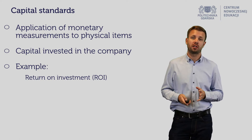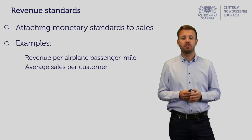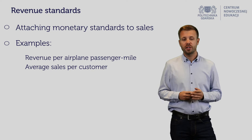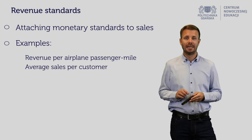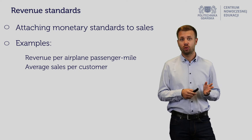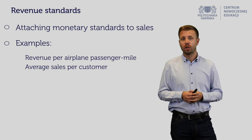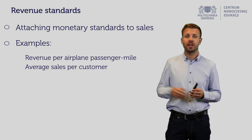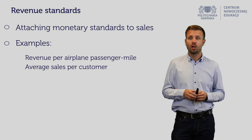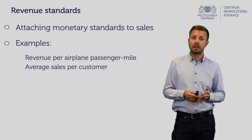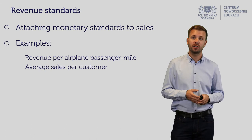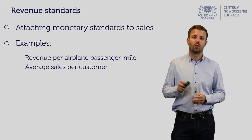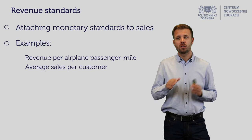Revenue standards practically mean you attach monetary standards to the sales generated. One example is revenue per air passenger mile. Imagine you own an airline and operate different types of flights: short-haul domestic flights like Gdansk to Warsaw lasting around 40 minutes, medium-haul intra-European flights like Warsaw to Milan Malpensa lasting around two hours, and long-haul flights like Warsaw to New York JFK.